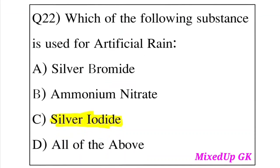Question 22: Which of the following substances is used for artificial rain? Option A: Silver bromide. Option B: Ammonium nitrate. Option C: Silver iodide. Option D: All of the above. The answer is Option C, Silver iodide. Silver iodide is the substance used for artificial rain.